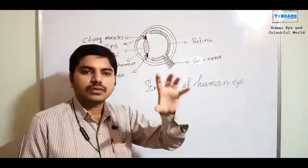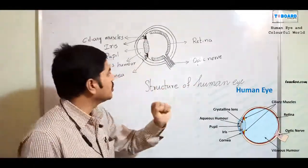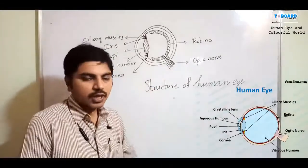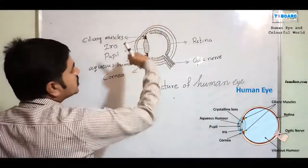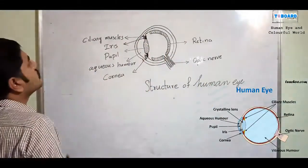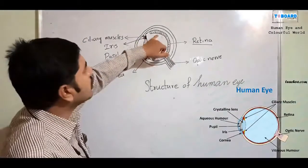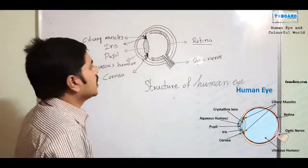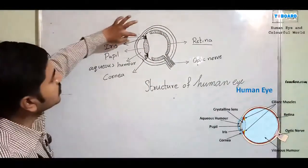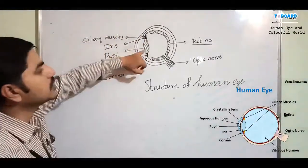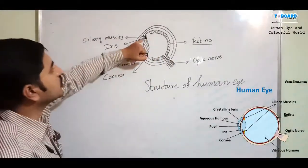Now the structure of the human eye — it behaves like a lens. Refraction occurs inside our eye to identify objects; the brain recognizes objects through the eye. Key structures include the retina, optic nerve, ciliary muscles, lens, pupil, iris, cornea, and aqueous humor.